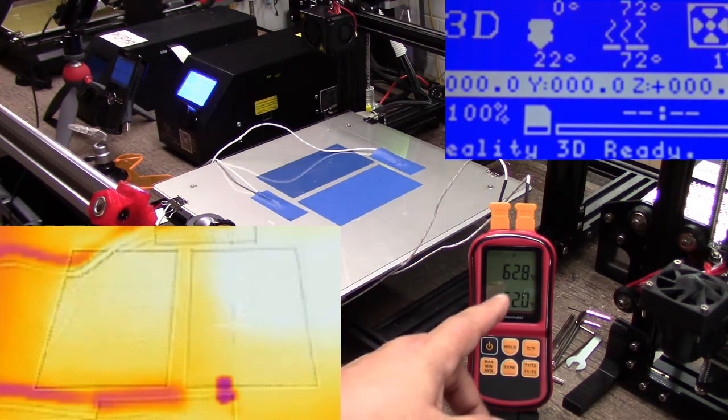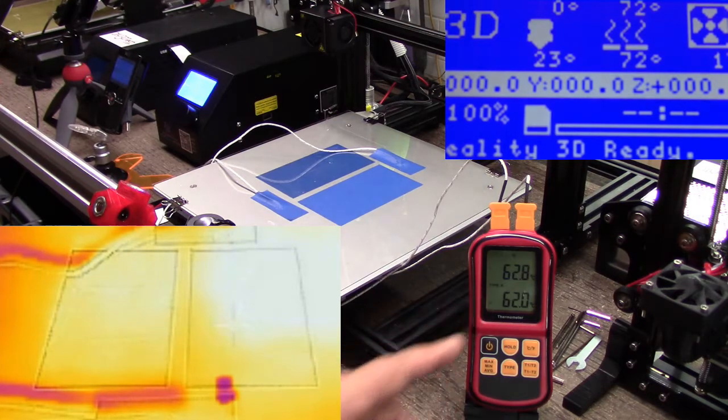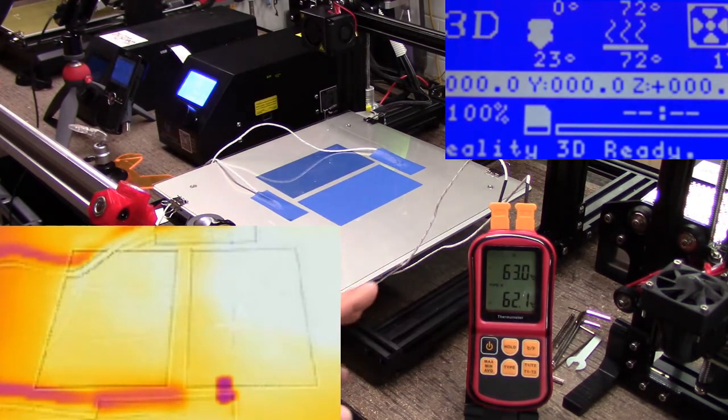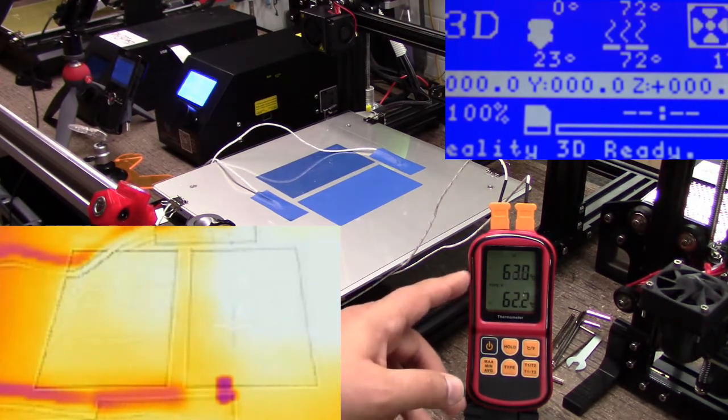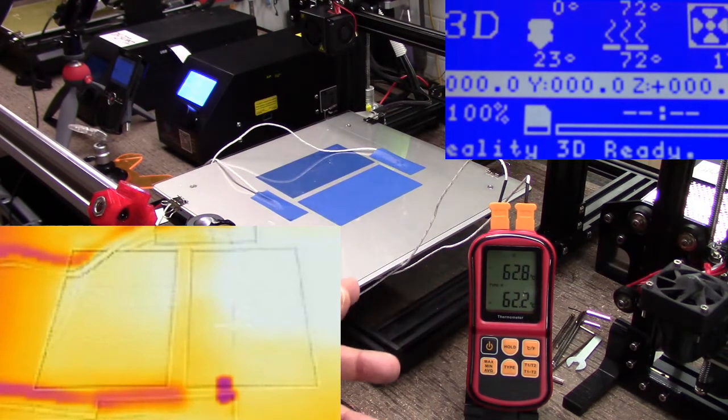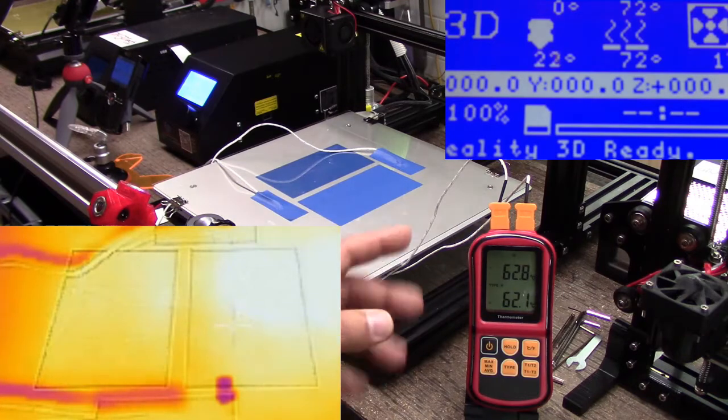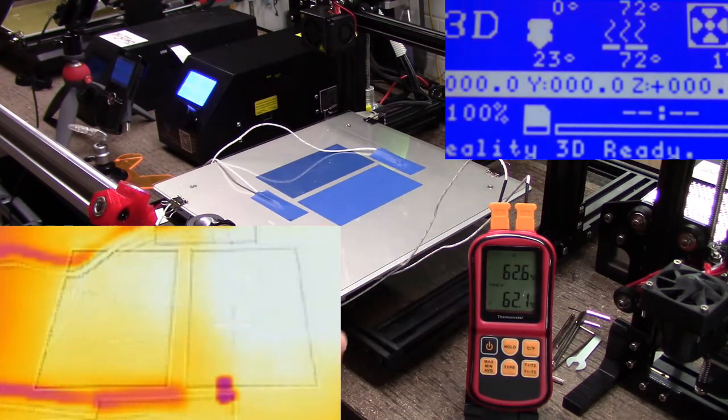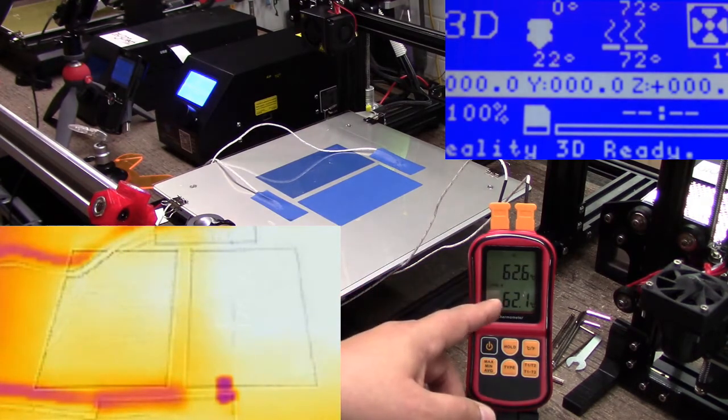So I'm still running at about 62. This is one of the interesting things probably worth noting is a lot of times in PLA on the straight bed I was running with tape about 60, 60°C and I found if I kicked it up to about 70°C I got better results. I think with PEI this is part of the reason because at about 70 degrees I'm getting about 62.